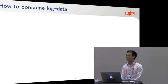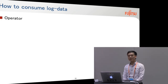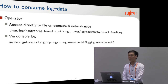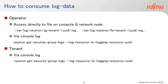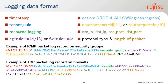After we enable logging, the log data will be output to the compute node or network node, or it can be forwarded to a central logging server in case of user demand. For the operator, they can access directly to the log file on the compute or network node, or use the console log. In the case of a tenant, they can only use the console log that we are proposing. On the screen, there is an example of log data for security group and an example of a TCPDUMP packet log for firewall, with main fields such as timestamp, Tenant UUID, and some other fields.